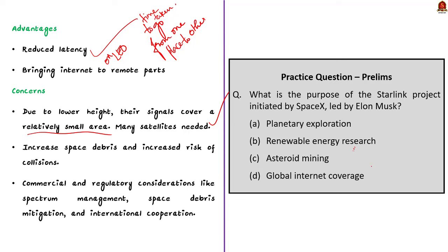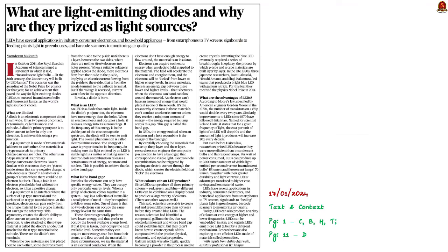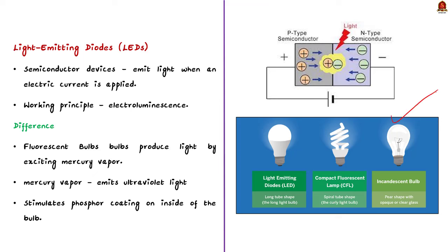These are important facts to remember about Starlink. Now let us move on to the next news article discussion. This text-in-context article talks about the working principles of LED lights and their importance. LED, or Light Emitting Diode, refers to semiconductor devices that emit light when an electric current is supplied. LEDs operate based on the principle of electroluminescence — when an electric current passes through a semiconductor material, it releases energy in the form of light.